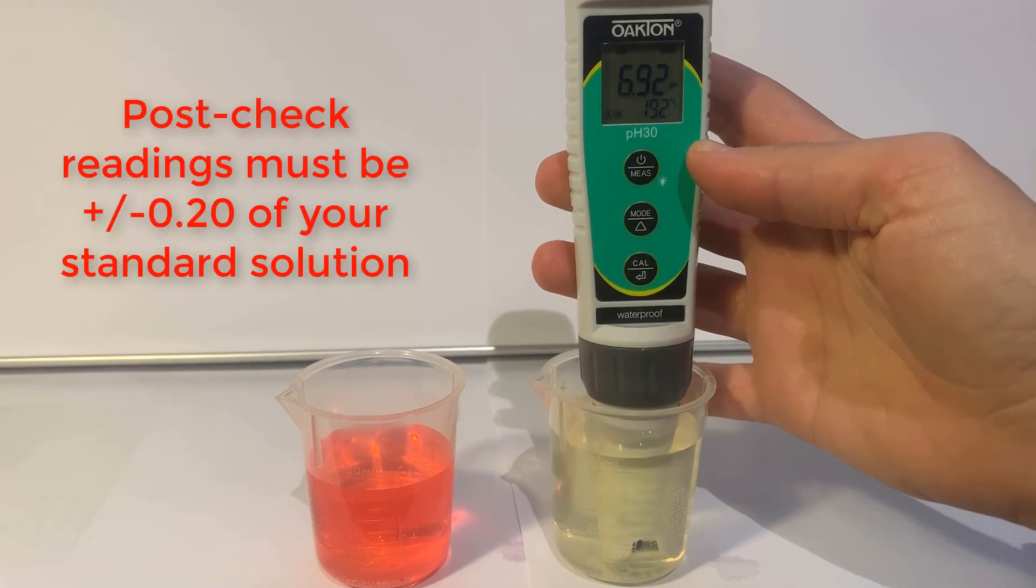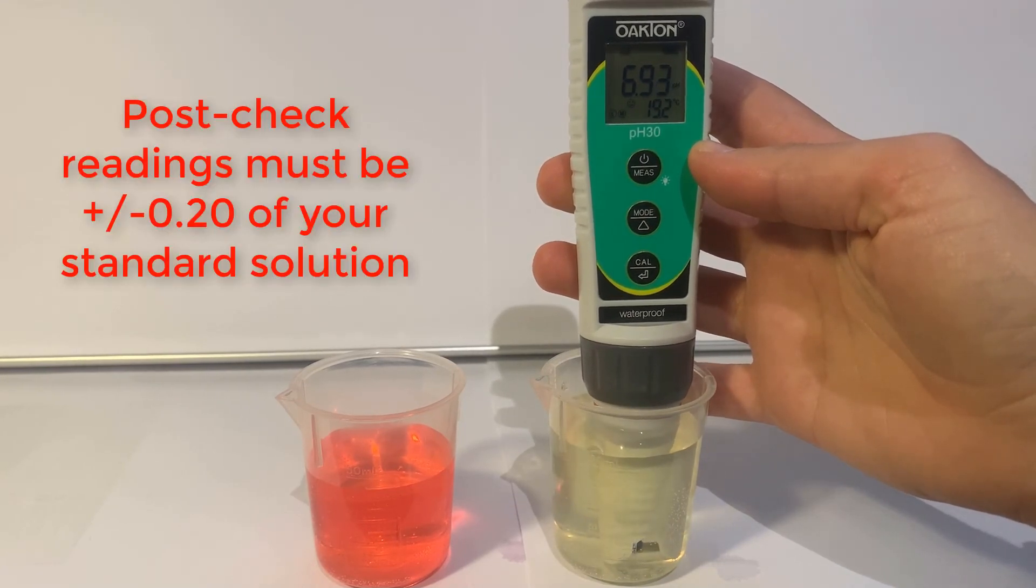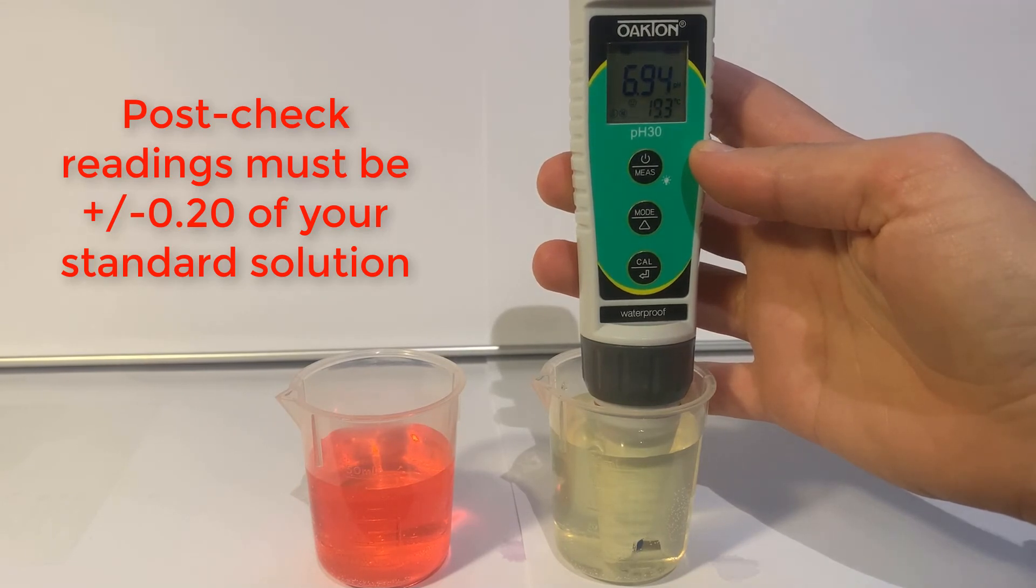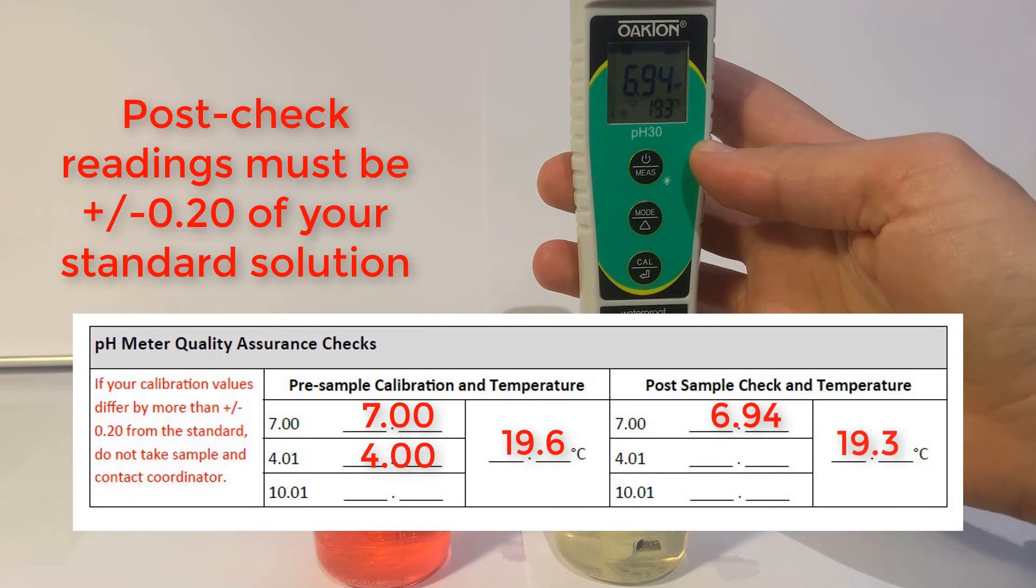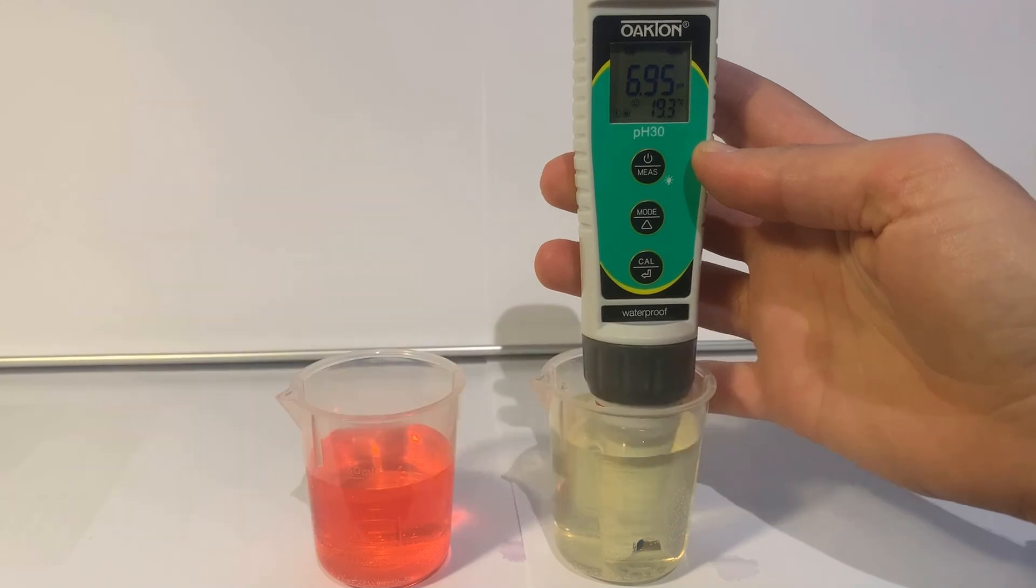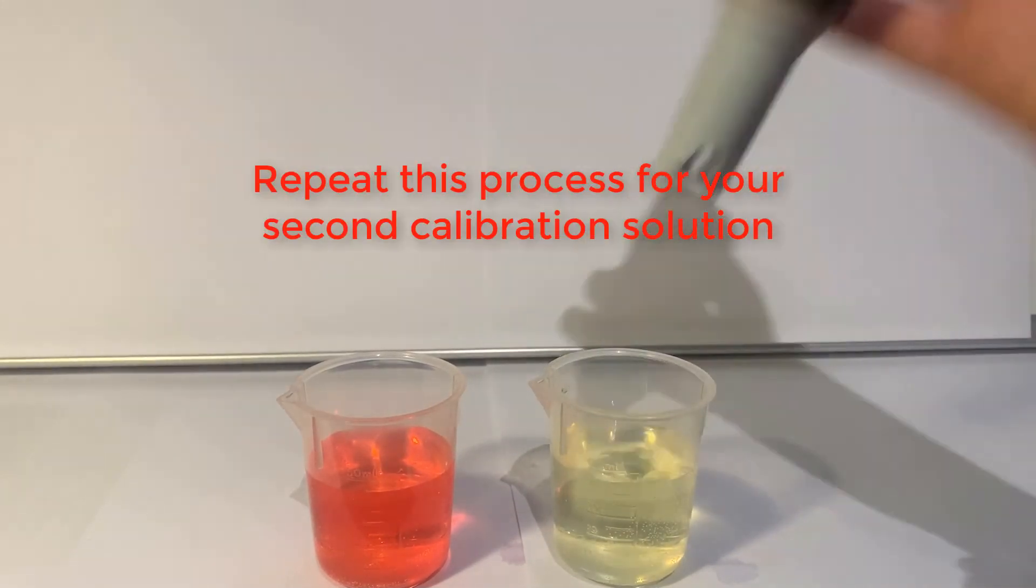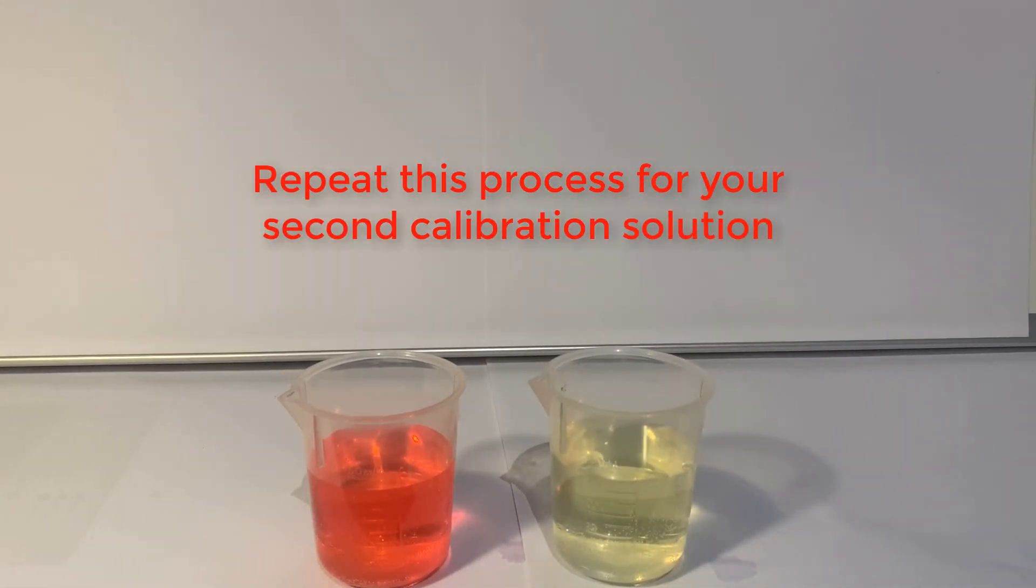This number must be within two tenths of your standard solution, so with Buffer 7 this needs to be between 6.8 and 7.2. If your reading is outside of this range, contact your coordinator for help resolving the issue. Repeat this exact same process for your second calibration solution.